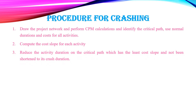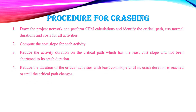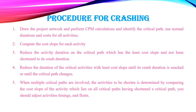Step 3 — Reduce the activity duration on the critical path that has the least cost slope and has not been shortened to its crash duration. Step 4 — Reduce the duration of critical activities with the least cost slope until the crash duration is reached or the critical path changes. Step 5 — When multiple critical paths are involved, determine the activity to be shortened by comparing cost slopes of activities lying on all critical paths; adjust activity timings and floats accordingly.